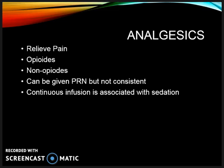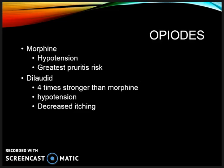Analgesics provide pain relief. Morphine releases histamines and has the highest risk of pruritus, nausea, and hypotension. Dilaudid is more powerful than morphine but is associated with a decreased risk of pruritus. All opiates decrease GI motility, and therefore the frequency of bowel movements should be assessed.